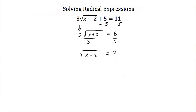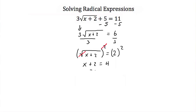Now the square root term is alone on one side, so we can square both sides. Squaring the square root of x plus 2 cancels the square root, leaving just x plus 2. On the right-hand side, 2 squared is 4. So we have x plus 2 is equal to 4. Subtracting 2 from both sides, we get x is equal to 2.